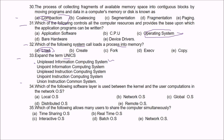Question 34: Which software layer is used between the kernel and user computation in a network OS? The answer is B — Network Computing System is the software layer used between the kernel and the user in a network OS.